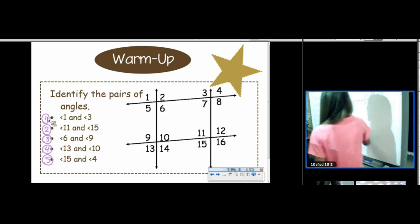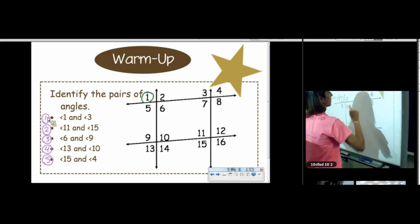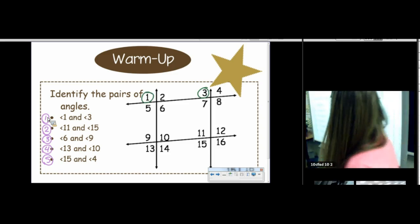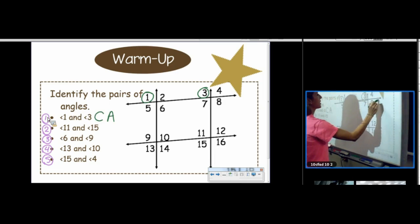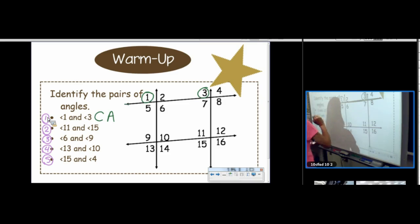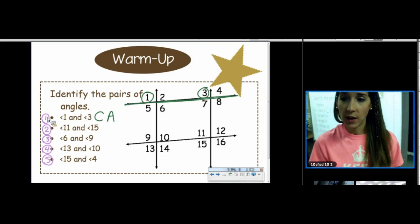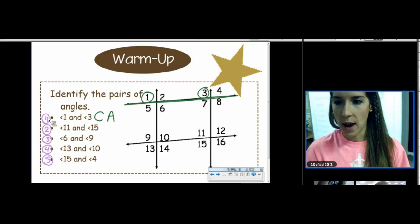Angles 1 and 3. You are correct. Those are corresponding angles. This is our transversal. It's important to keep track of what your transversal is as you move around in the different angle pairs.